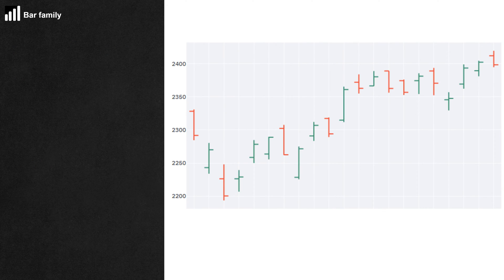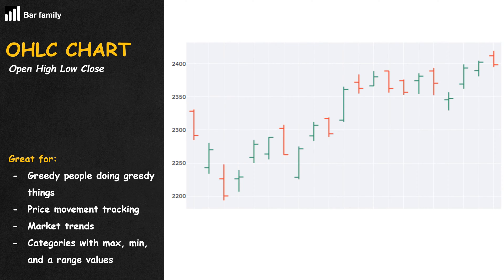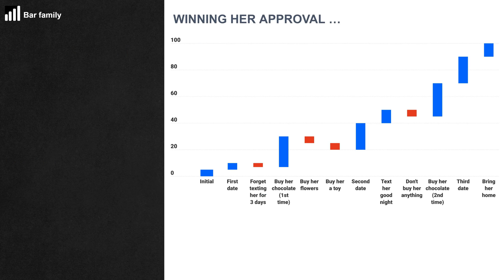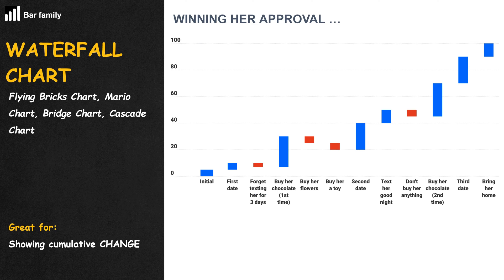One variation of the candlestick is the OHLC chart, where two marks on the left and right represent the open and closing prices respectively. When a bar or column starts where the previous one left off, we have the waterfall chart. This chart helps understand the cumulative effect of changes, both positive and negative.